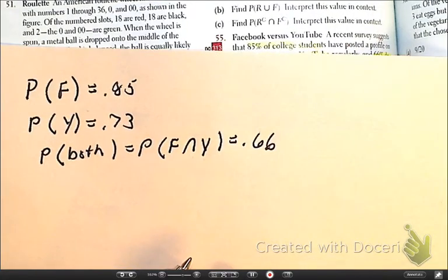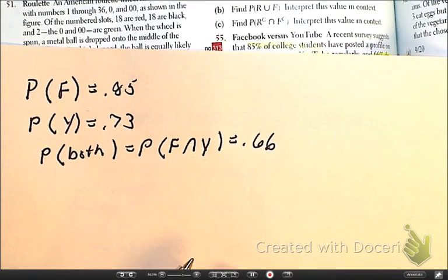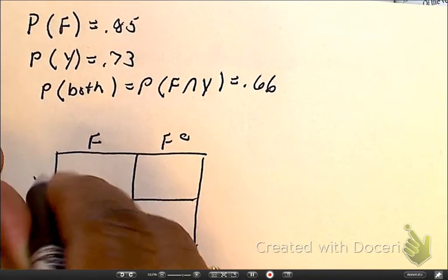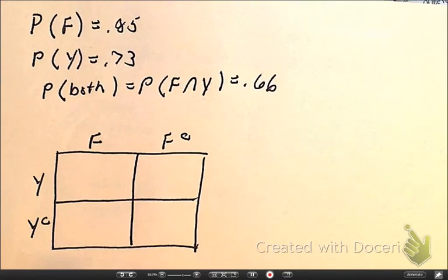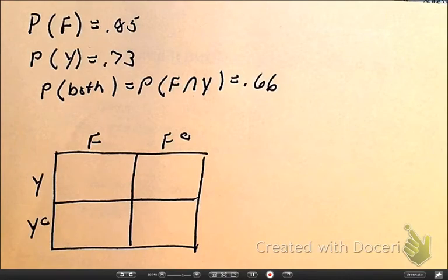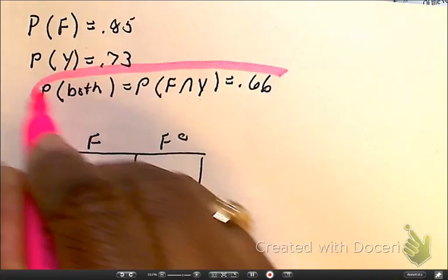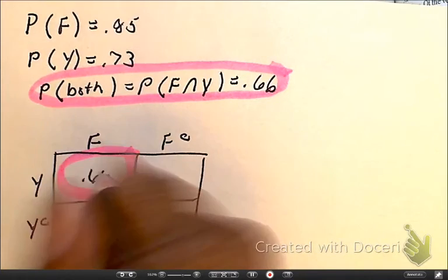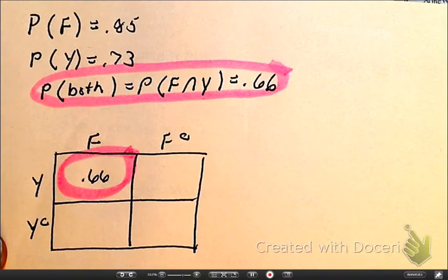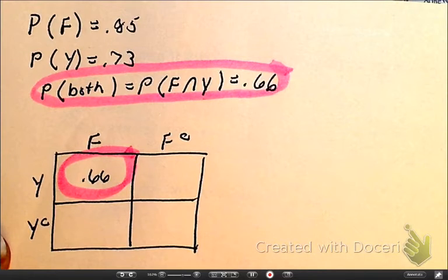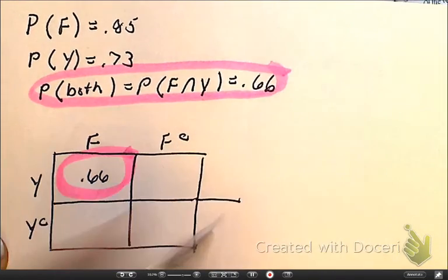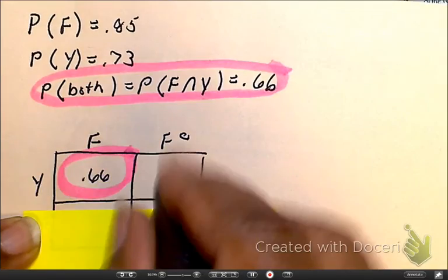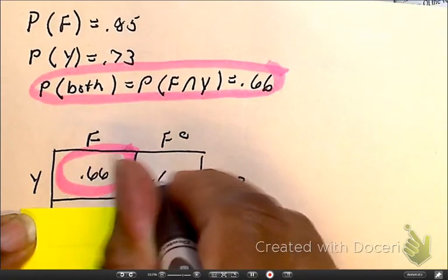Now we have Facebook or not, YouTube or not. Remember we always start with where it is in common, where it intercepts, which is right in here, and that value is going to be 66%. I'm going to want my total here because as I cover up a couple things, they said YouTube users give you a total of 73. So here's 0.73 and here's the math, 0.07.